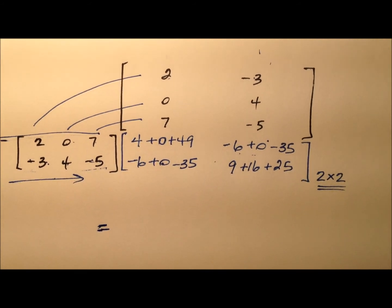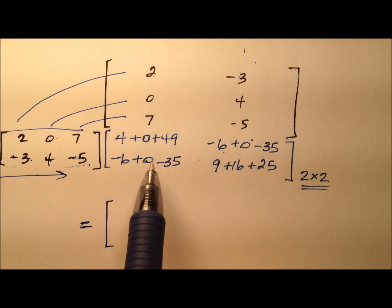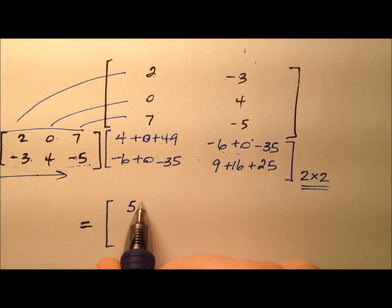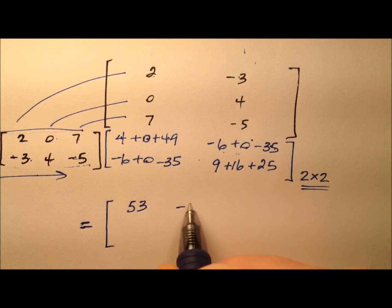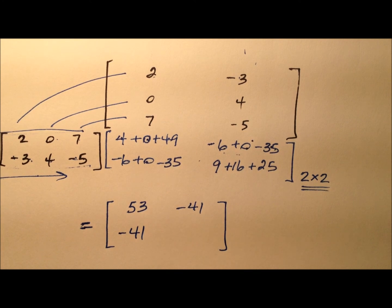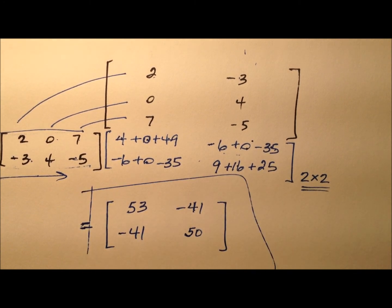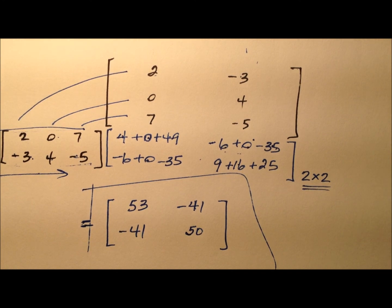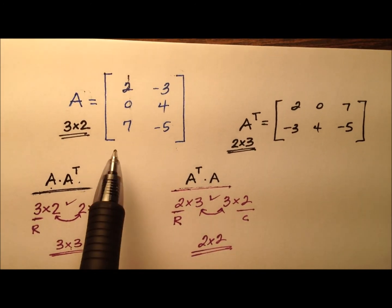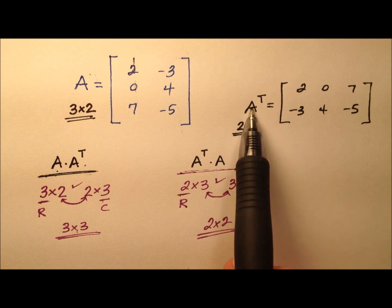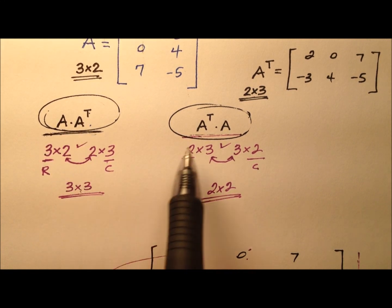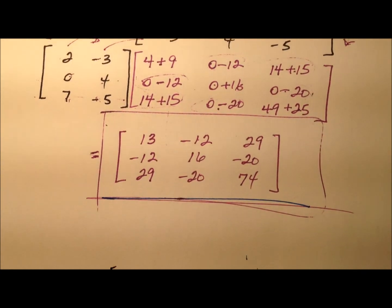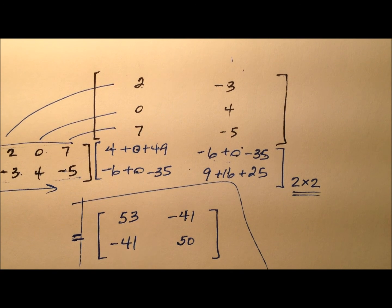To wrap up, the entries for the two by two product matrix are: four plus zero plus forty-nine makes fifty-three — the sum of perfect squares. Negative six plus zero plus negative thirty-five is negative forty-one, and it's negative forty-one in the symmetric corner as well. Nine plus sixteen plus twenty-five makes fifty. So this is our two by two square product matrix. To recap: we started with matrix A, a three by two; found the transpose of A, a two by three; and evaluated both A times its transpose (giving a three by three) and the transpose of A times A (giving a two by two).